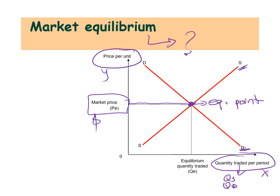What does that mean? We have a market price — let's say for example it is five dollars. At five dollars, if I move along and touch the supply curve and go down, my quantity supplied would be 10. And if I move along and touch the demand curve and go down, my quantity demanded would also be 10. So quantity demanded equals quantity supplied equals 10 units.